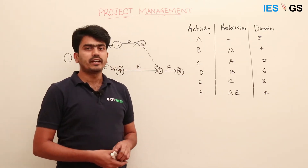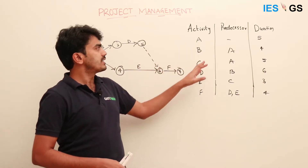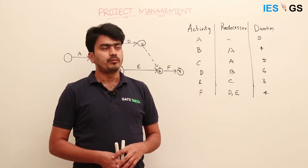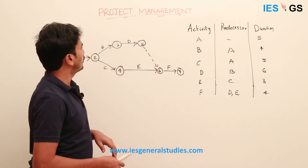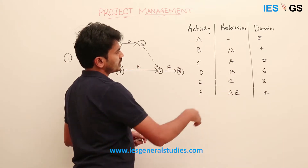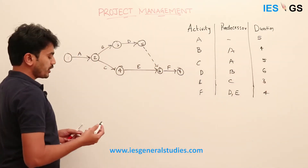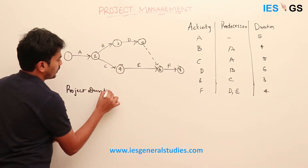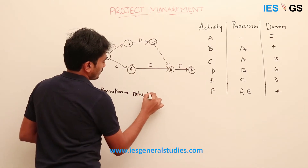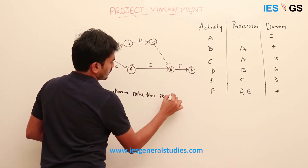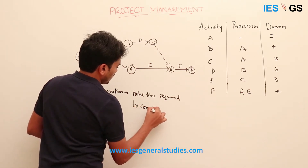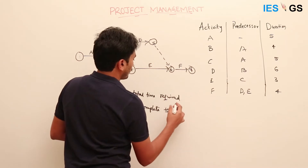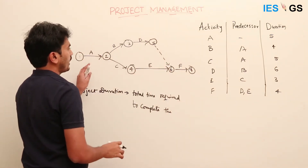Now we know how to draw a network diagram using given activities and their predecessors. Our objective is to find out the total project duration using this network diagram. The individual activity times are given, and the project duration is the total time required to complete the project — it is not the summation of individual activity timings.